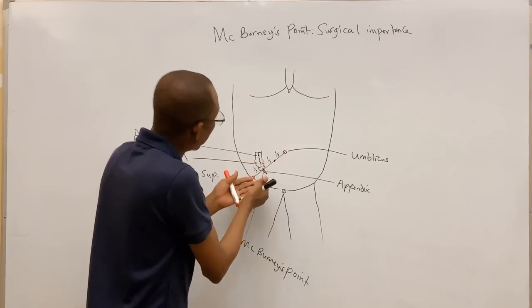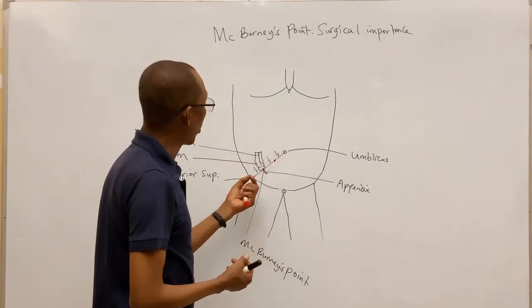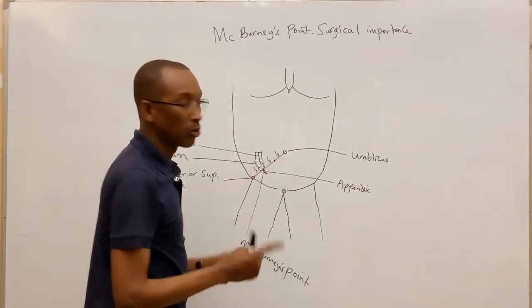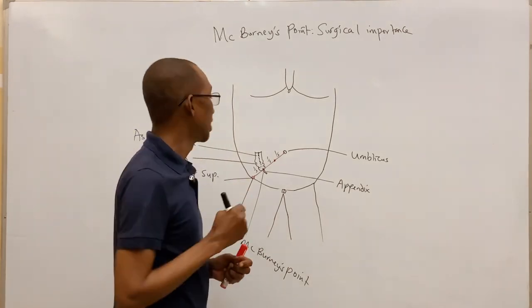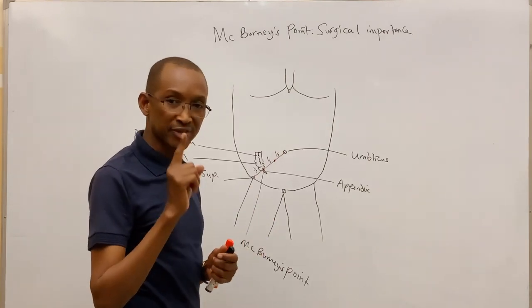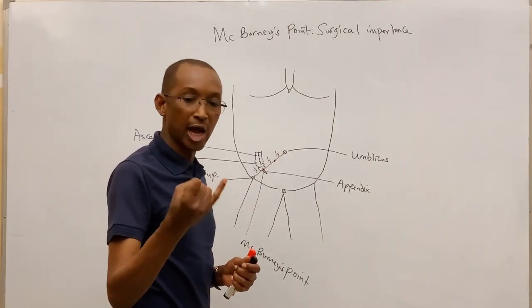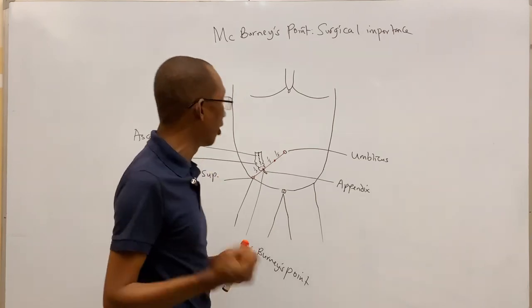So at the lower aspect of the cecum, there we have that diverticulum or blind tube which is finger-like, just like our index finger. It can be as long as our index finger or even more than that, and it may be as short as our small finger or even less than that.